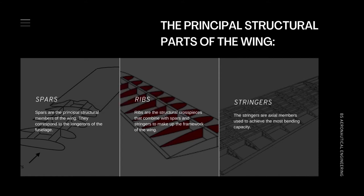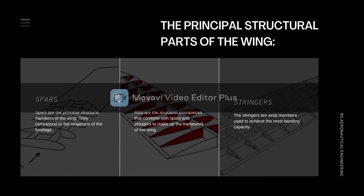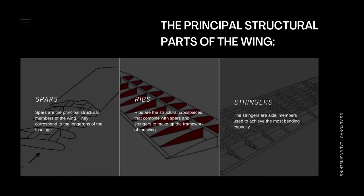Next, the ribs. Ribs are the structural cross pieces that combine with spars and stringers to make up the framework of the wing. They usually extend from the wing leading edge to the rear spar to the trailing edge of the wing. The ribs give the wing its cambered shape and transmit the load from the skin and stringers to the spars. Similar ribs are also used in ailerons, elevators, rudders, and stabilizers. Wing ribs are usually manufactured from either wood or metal.